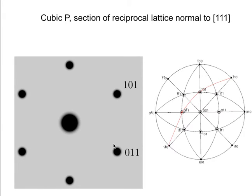I am only labeling 2 of the spots. To get a third vector, I go along one and subtract the other: (101) minus (011) gives (1-10). So this vector will be [1-10] and so on. Once you have defined 2 vectors everything else is trivial — it is just a linear combination. This point in the middle is the origin of the reciprocal lattice; you do not index that — you can put it as 000 but it is the origin of all the reciprocal lattice vectors.